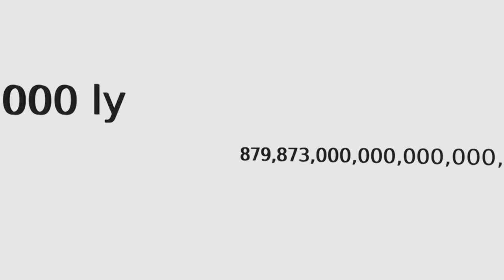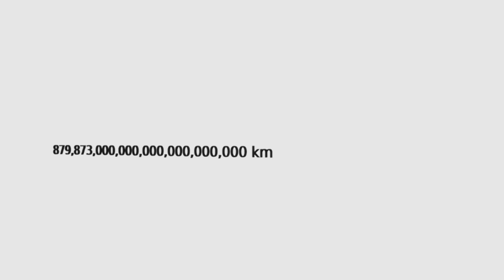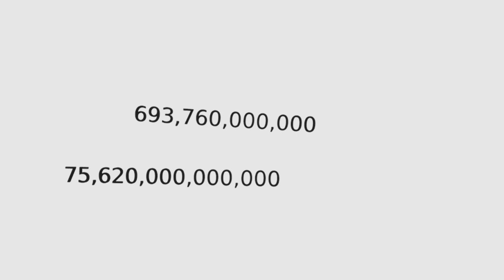So how big is the universe? Well, nobody knows. The universe is actually expanding, so we can't see past a certain point. That point just happens to be about 46.5 billion light years in any given direction, which means that the observable universe has a diameter of about 93 billion light years. That is equivalent to 879,873,000,000,000 kilometers. That means the observable universe is 15,500 times larger than IC 1101, the largest galaxy we know. 914,500 times larger than our own galaxy, the Milky Way. 693,760,000,000 times larger than our star, the Sun. 75,620,000,000,000 times larger than Earth. And a grand total of 567,152,000,000,000 times larger than a human.